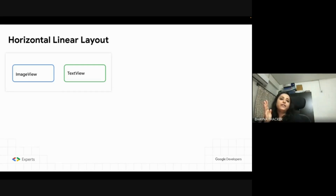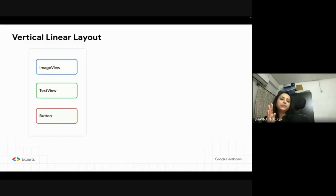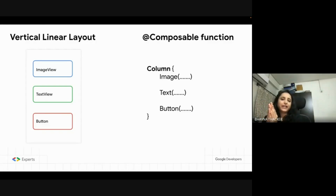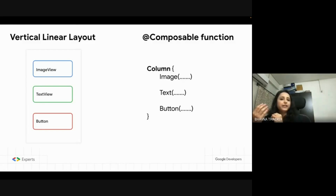If a horizontal linear layout's Compose equivalent is Row, then the vertical linear layout equivalent will be Column — there are no prizes for guessing that. In a vertical linear layout, you arrange elements vertically one below the other. So that's the Column. When you wrap inside Column, everything comes one below the other.